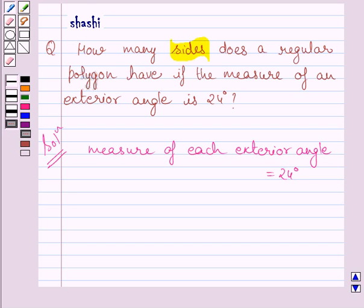Let us assume that number of sides of a regular polygon is N. So we can write, let N be the number of sides of a regular polygon.